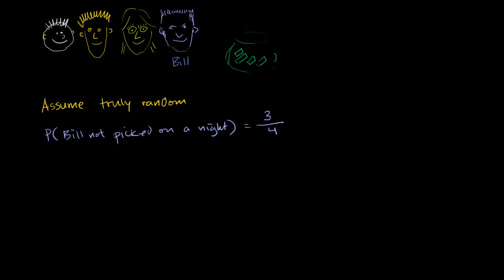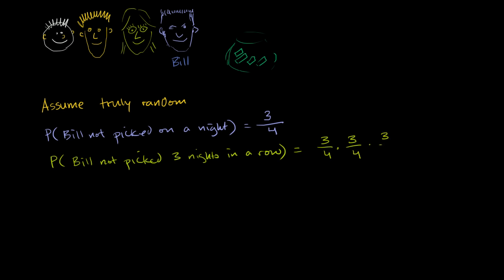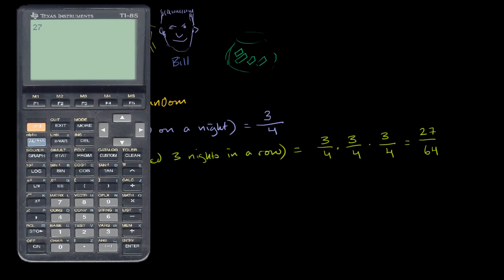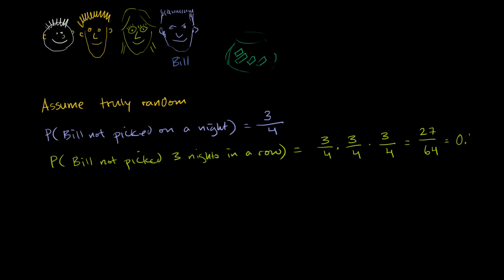What's the probability that Bill's not picked three nights in a row? That's the probability he's not picked on the first night, times the probability he's not picked on the second night, times the probability he's not picked on the third night. That's three-fourths to the third power: three times three times three is 27, over four to the third power, which is 64. As a decimal, 27 divided by 64 equals approximately 0.42.